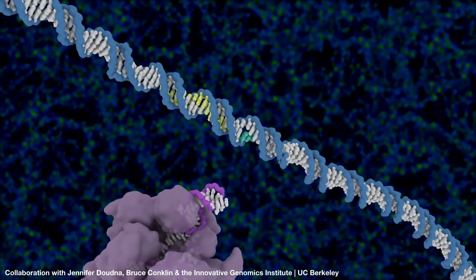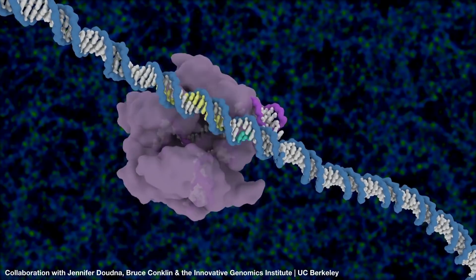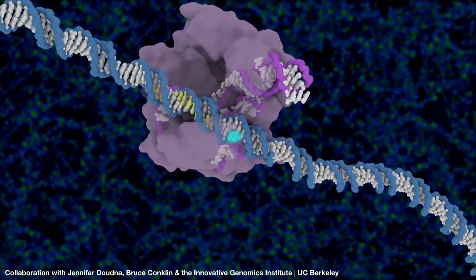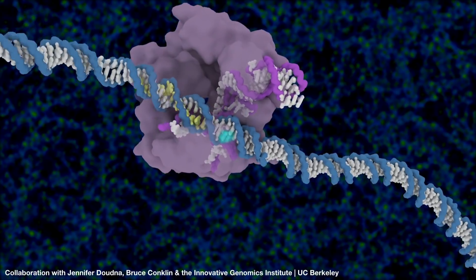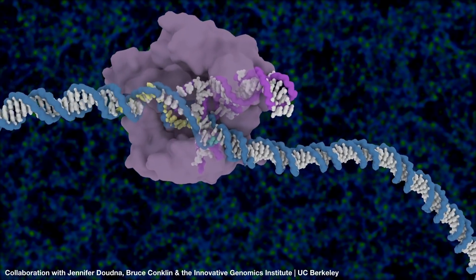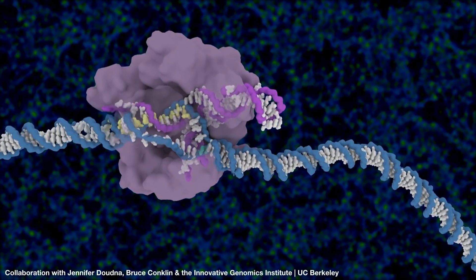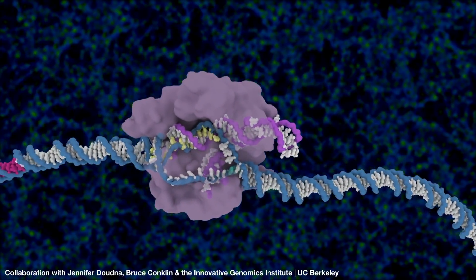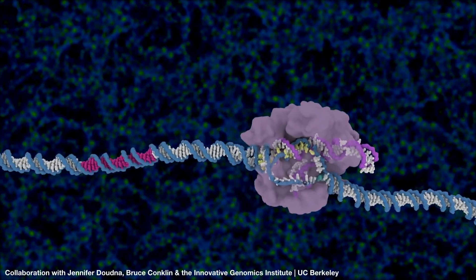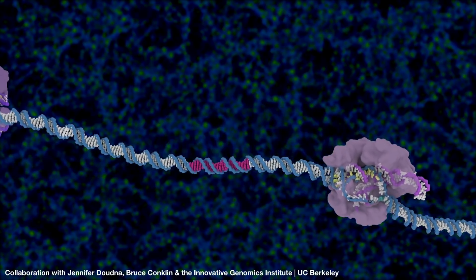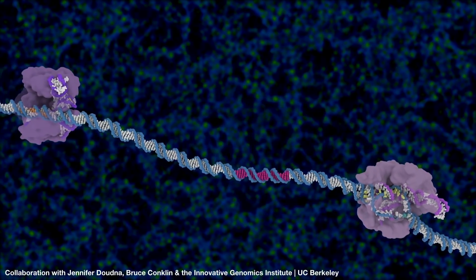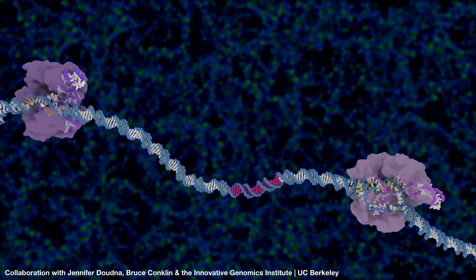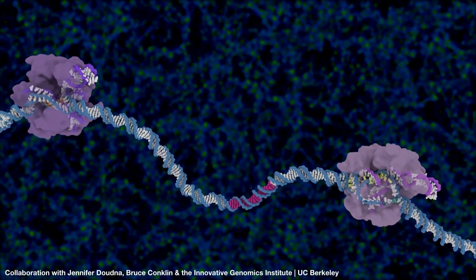Scientists are now able to use protein machines to edit genomes. I'm sure all of you have heard of CRISPR. CRISPR takes advantage of a protein known as Cas9, which can be engineered to recognize and cut a very specific sequence of DNA.